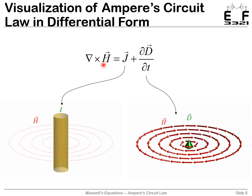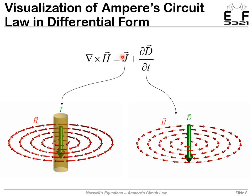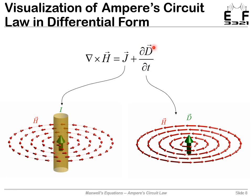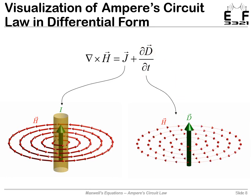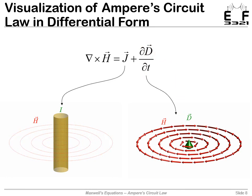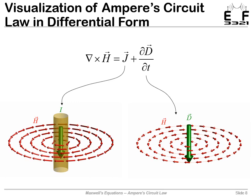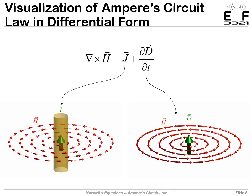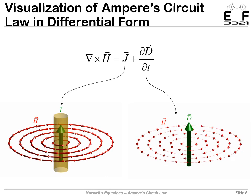On the right, we have the circulation of H being set equal to the displacement current, or the partial derivative of D with respect to time. In the image to the right, we notice that the more quickly the D field is changing, the stronger the magnetic field we get.